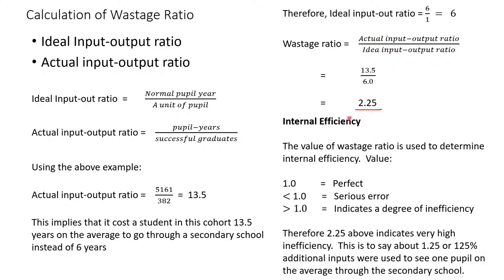The excess of 1.25 above the ideal means that 125 percent additional inputs were used to push one pupil through the system. Instead of spending 100 percent of the expected resource input, the system spent 225 percent — indicating significant wastage and a highly inefficient educational system.